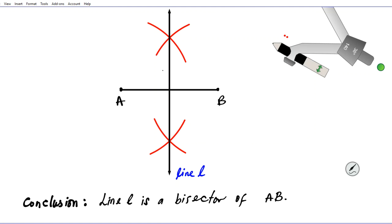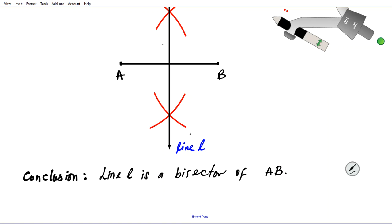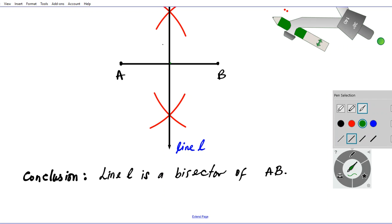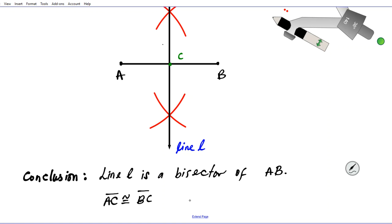What does that mean? Well, using the fact that line L is a bisector of AB, and let's call this point C, what can we say? We can say that segment AC is congruent to segment BC using geometric notation. If you want to use lengths notation, we can simply say AC, the length right here, is equal to BC. That's what you have when you create a bisector.